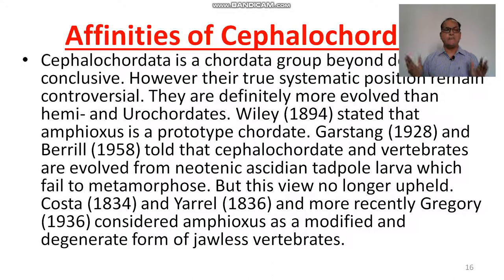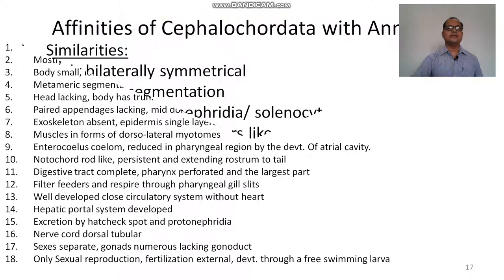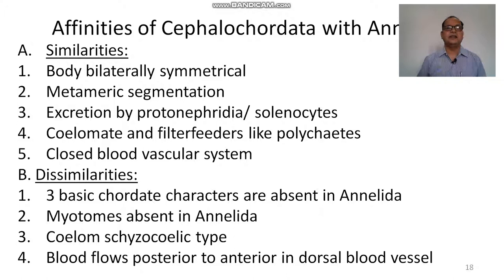More recently, Gregory considered Amphioxus as a modified degenerate from the ancestral vertebrates. General characters of Cephalochordata have been discussed in previous lectures, so there is no need to discuss them further. Now come the affinities — similarities and dissimilarities. Similarities of Cephalochordata are based on those with Annelida.